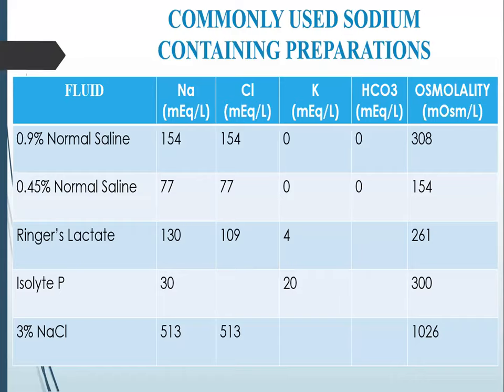0.45% normal saline has exactly half of these values: 77 milliequivalents per litre of sodium, 77 milliequivalents per litre of chloride, and an osmolality of 154 milliosmol per litre. Ringer's lactate has 130 milliequivalents per litre of sodium, 109 milliequivalents per litre of chloride, and 4 milliequivalents per litre of potassium. The osmolality of Ringer's lactate is 261 milliosmol per litre.